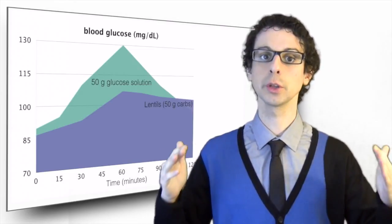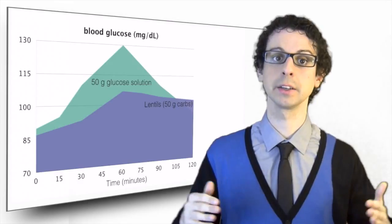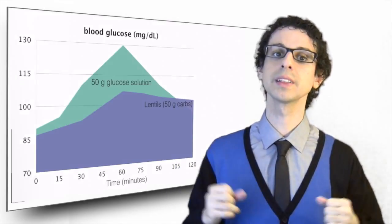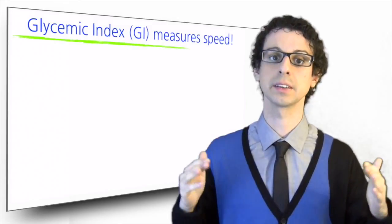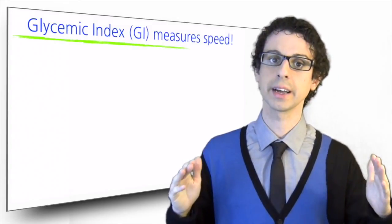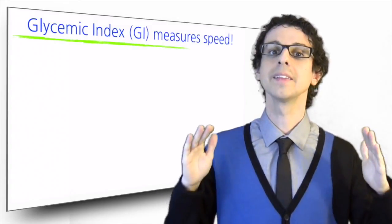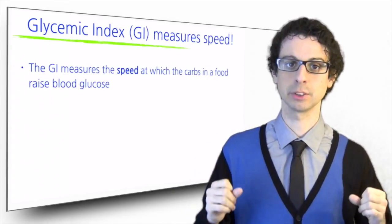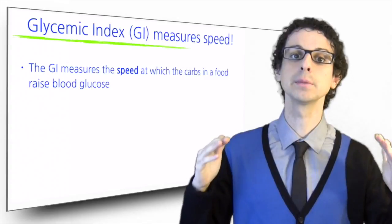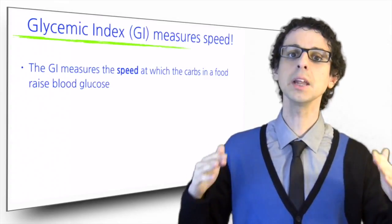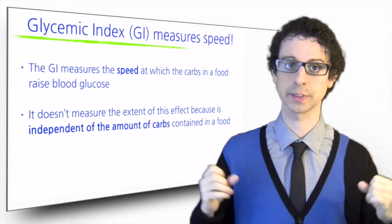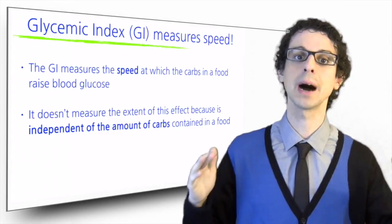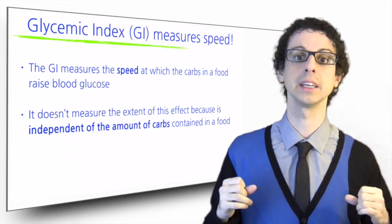The numbers I will show you here are all calculated using glucose as a standard. The concept of glycemic index is often misunderstood, so let me clarify a very important point. The glycemic index is a measure of the speed at which the carbs in a food raise blood glucose levels. It is not a measure of the extent of this effect, because the glycemic index is independent of the amount of carbs contained in a food.